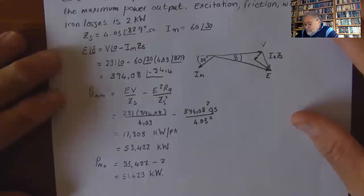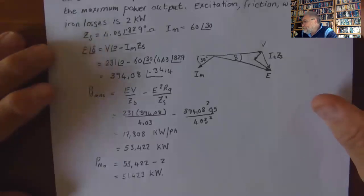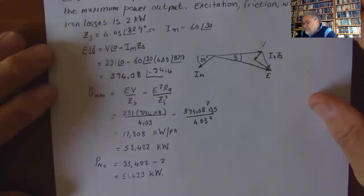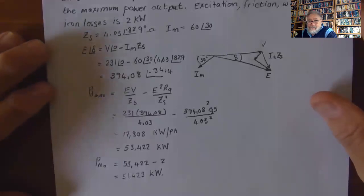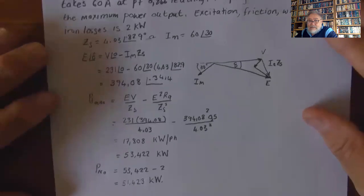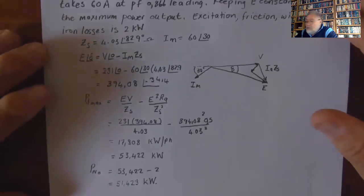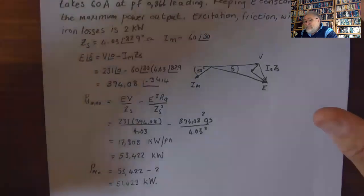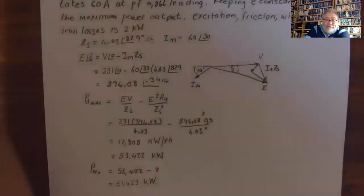The net output is the total maximum developed power minus the losses: 53.422 minus 2 gives 51.422 kilowatts. This concludes Chapter 3. Next we will discuss the salient pole machine.